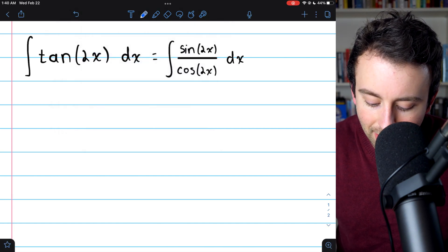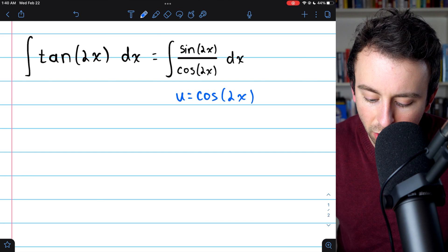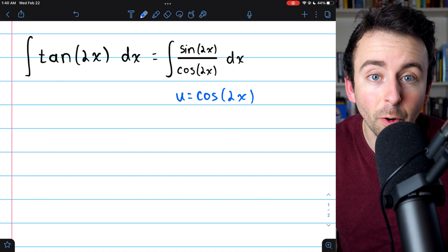we'll see that the derivative of that is going to give us negative sine of 2x multiplied by 2, which, with a little bit of work, is going to match up with what's left in the integrand.